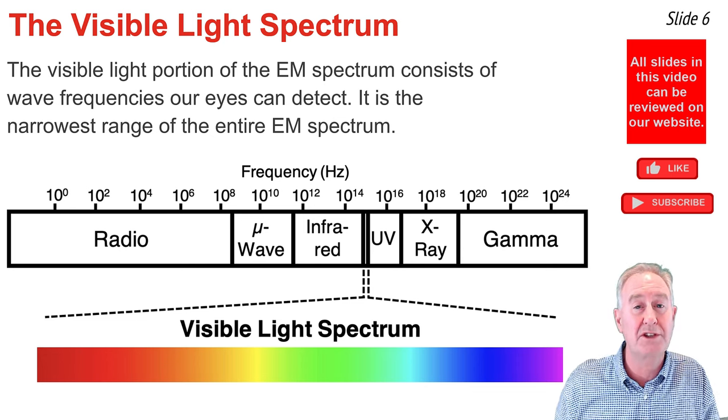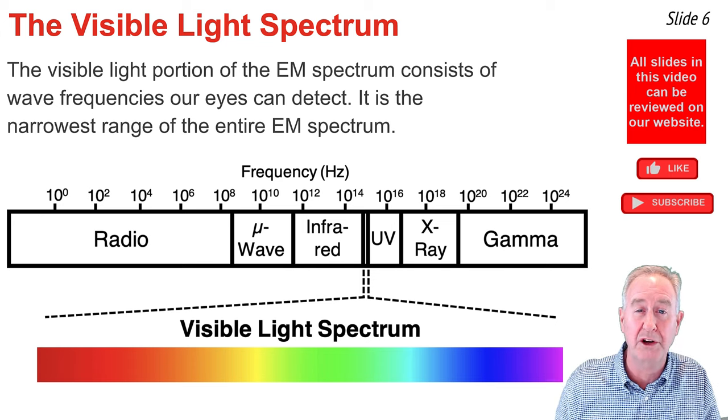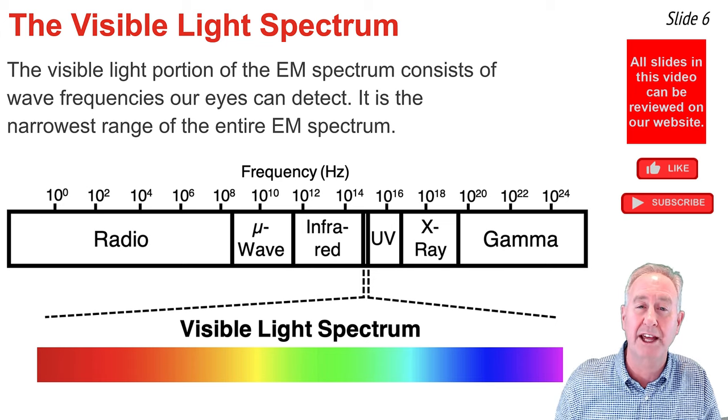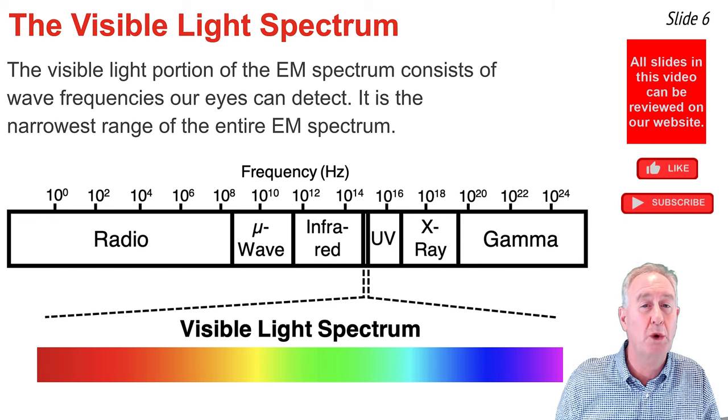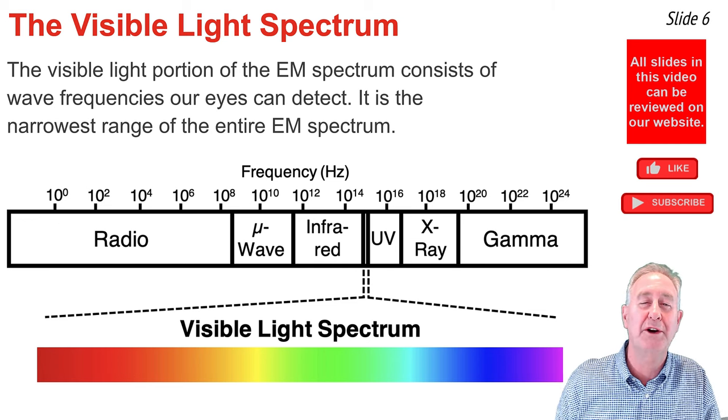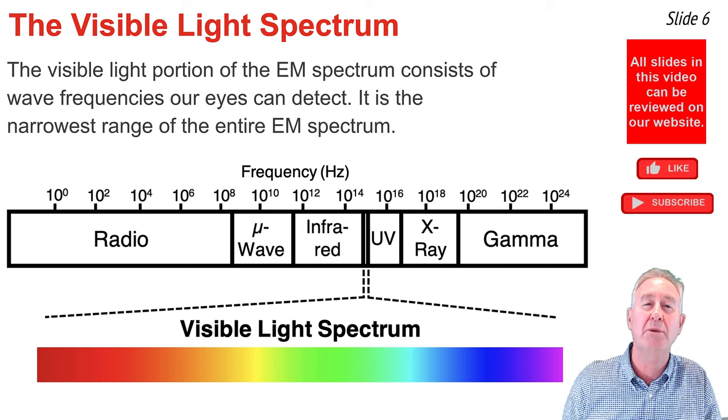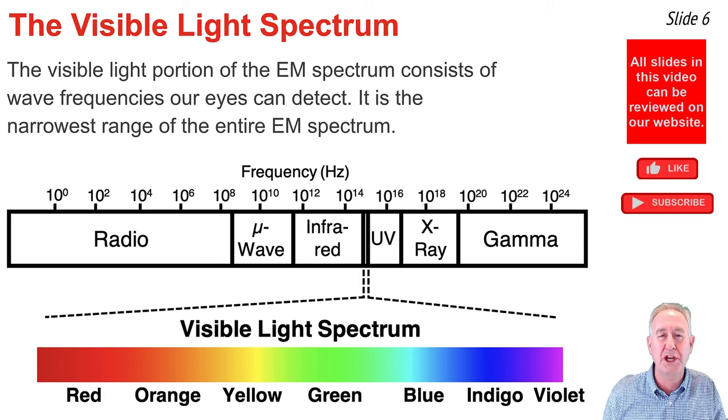The visible light region consists of colors with each color associated with a wavelength. We can remember the ordering of the colors by the name Roy G. Biv, where each letter of Roy's name is associated with the color red, orange, yellow, green, blue, indigo, and violet.